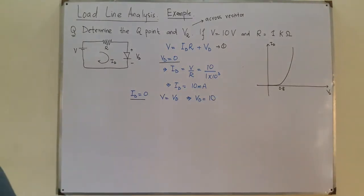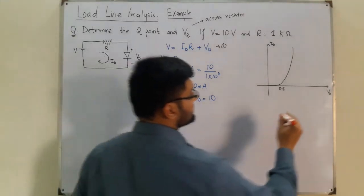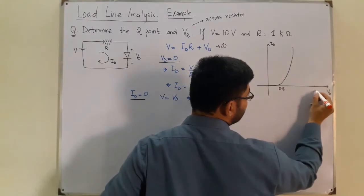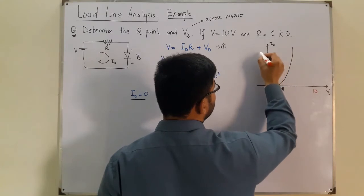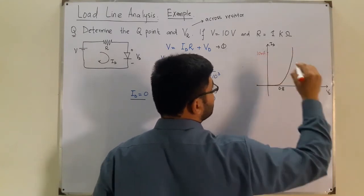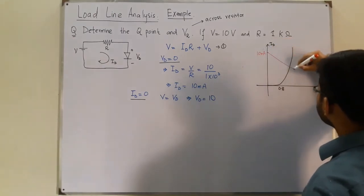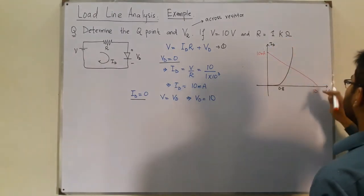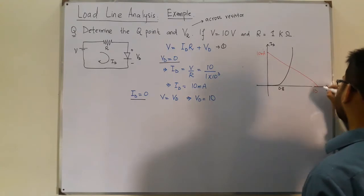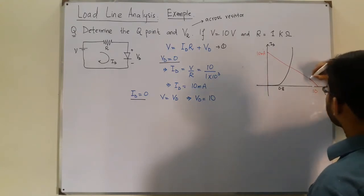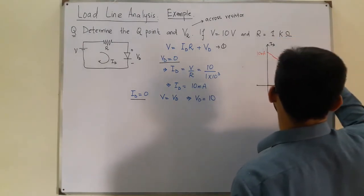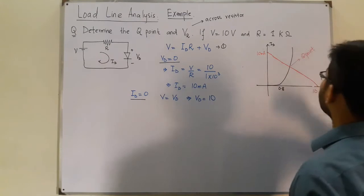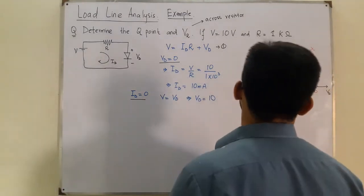Now let me draw the load line. So let's say this value is 10 volts and this value is 10 milliamperes. I'll join these two together. So this is 10 volts. We have the Q point which is this one.